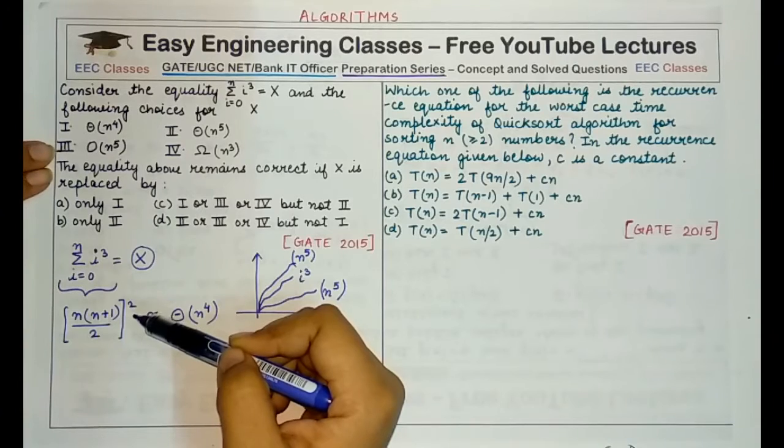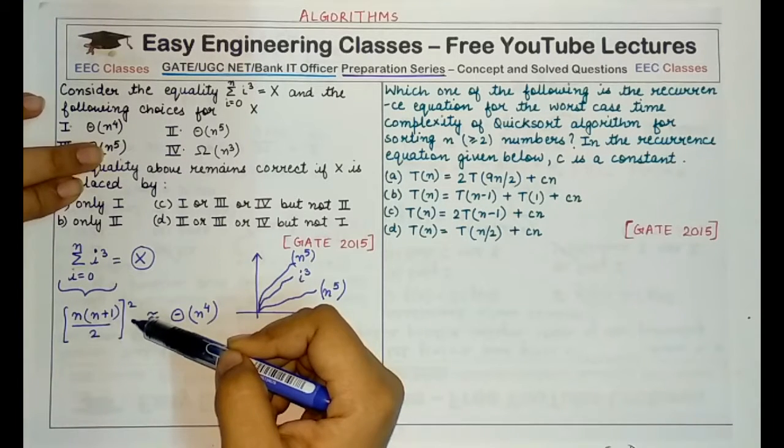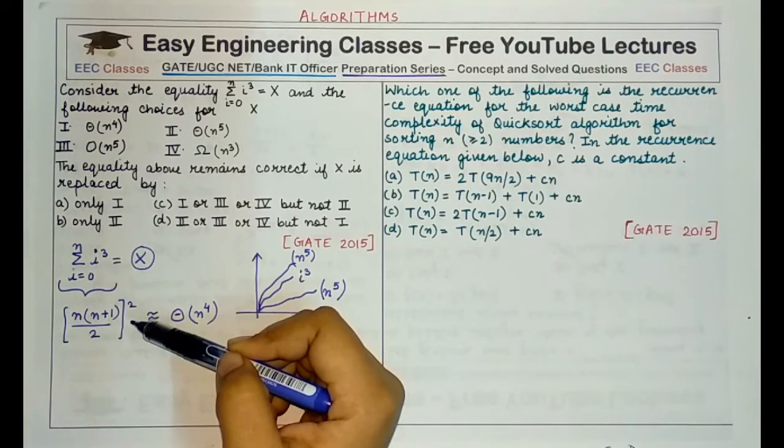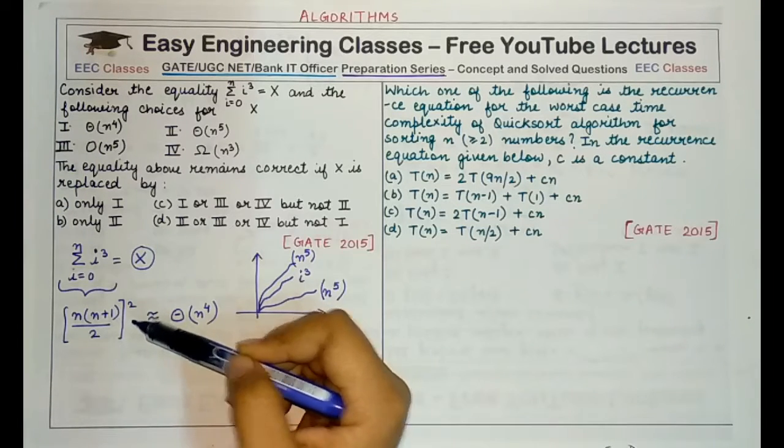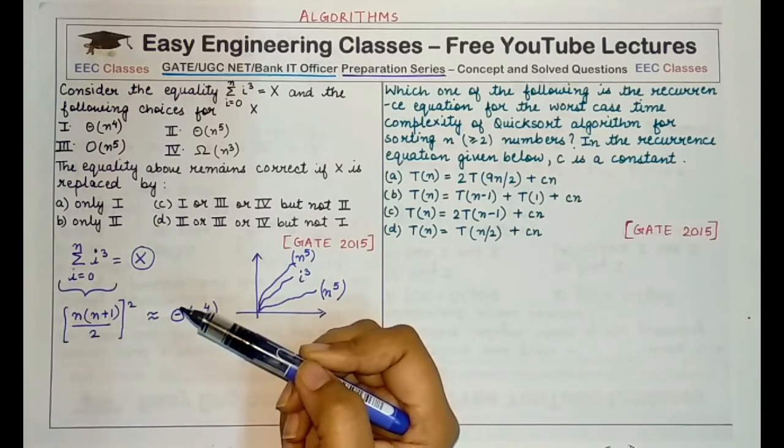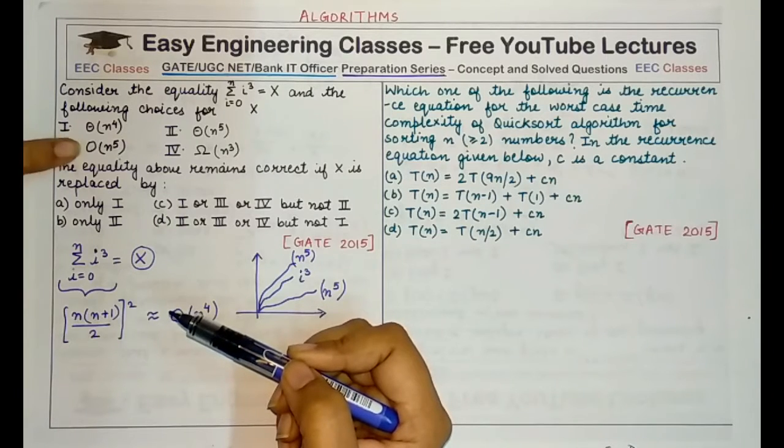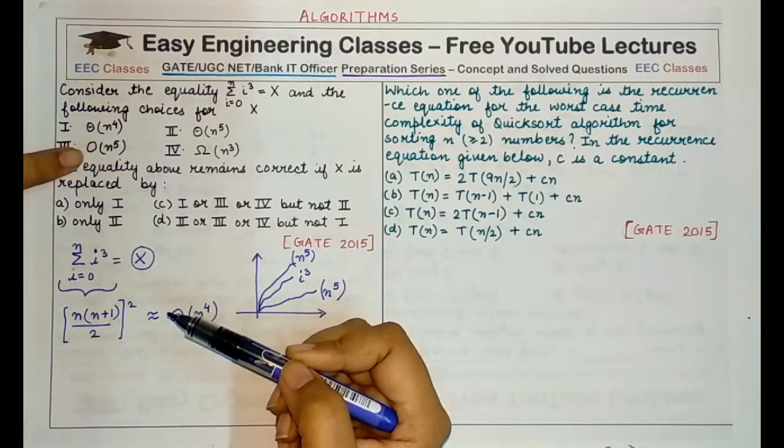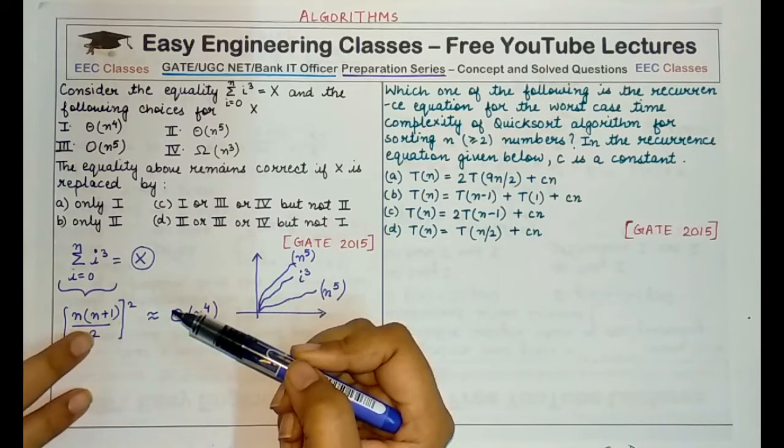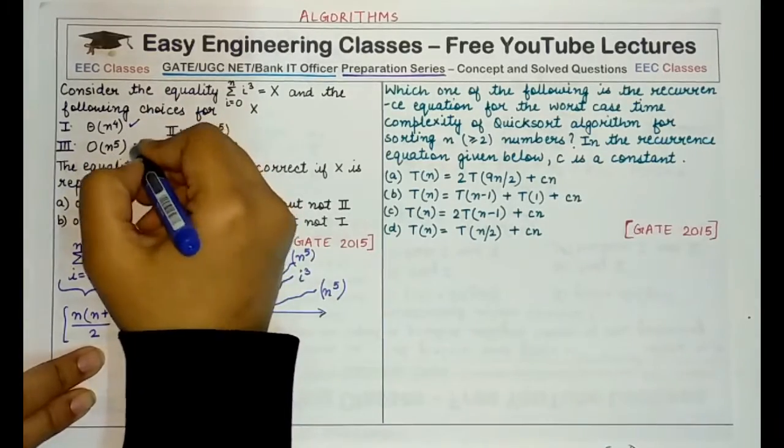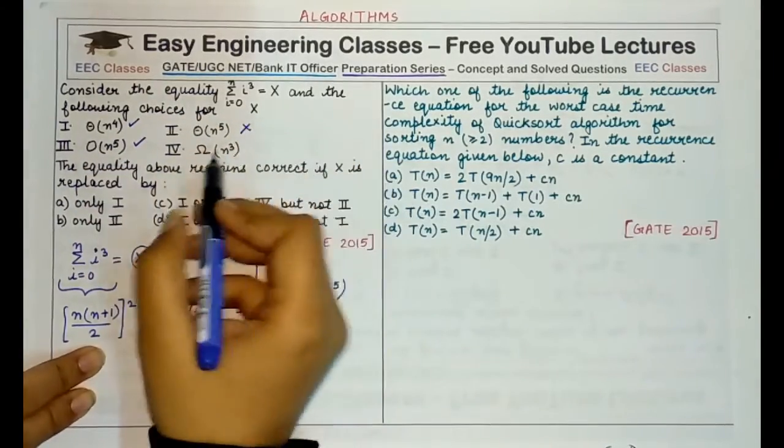Now, can we replace x with the third option big O of n raised to power 5? Yes, we can definitely replace it because n raised to power 4 will be upper bounded by n raised to power 5 and thus big O is an upper bound on n raised to power 4 or this particular expression. So this is correct, this is correct, this is not correct.